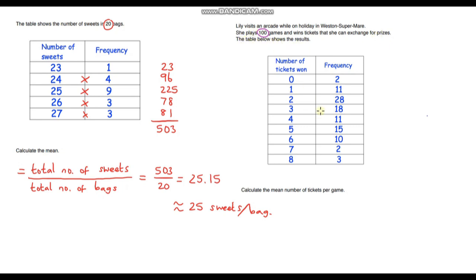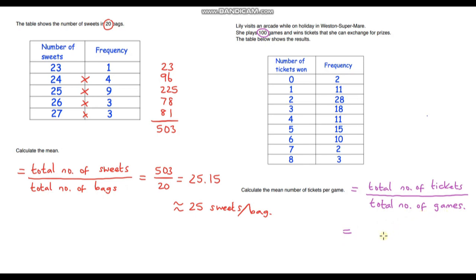The table below shows the results from an arcade game, and we need to calculate the mean number of tickets per game. That's going to be the total number of tickets divided by the total number of games. We know there are 100 games — if we weren't told, we could calculate it by adding all the frequencies together. So now we just need to work out the total number of tickets.